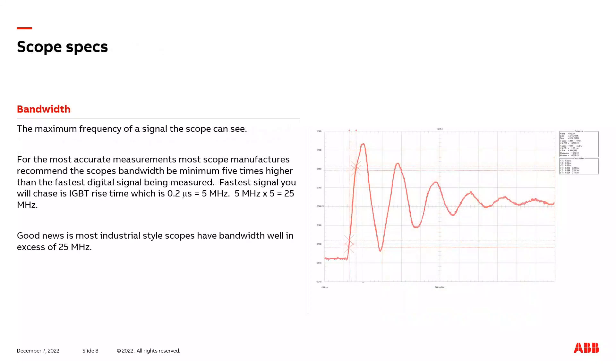I would now like to discuss two specification items that you want to make sure your scope has minimum ratings for so that you select the correct scope. The first spec item I'd like to discuss is bandwidth. Bandwidth is the maximum frequency that your scope can see. What does that mean? Well, for example, if the bandwidth of your scope had a max rating of 50 hertz and the signal frequency that you're trying to measure is 60 hertz, the scope would never see it. It would just be a flat line on the scope. So it's very important that your scope have a high enough bandwidth so that you can see fast signals that can occur on a VFD. Now, manufacturers recommend that scopes have a bandwidth rating five times higher than the maximum frequency of a signal you could be trying to measure.